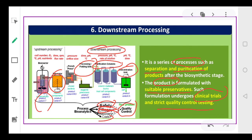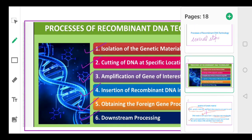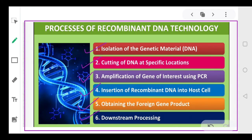Recombinant DNA technology undergoes six different processes: isolation of the genetic material, cutting of DNA at specific locations, amplification, insertion, obtaining the gene product, and lastly the downstream process. After passing all these processes in the required sequence, only then is the product launched to the market.